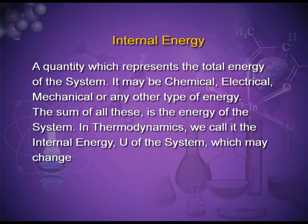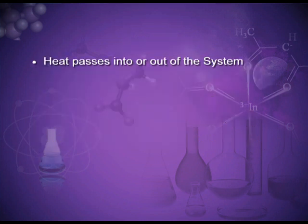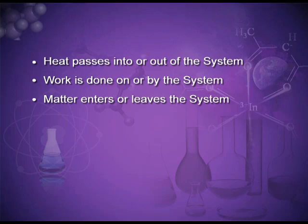Internal energy may include chemical, electrical, mechanical, or any other type of energy. The sum of all these is the energy of the system; in thermodynamics we call it internal energy, with symbol U (previously the symbol was capital E). Internal energy of the system can be changed when heat passes into or out of the system, work is done on or by the system, or matter enters or leaves the system. Determining the exact value of internal energy is not possible, so we find the change in internal energy.